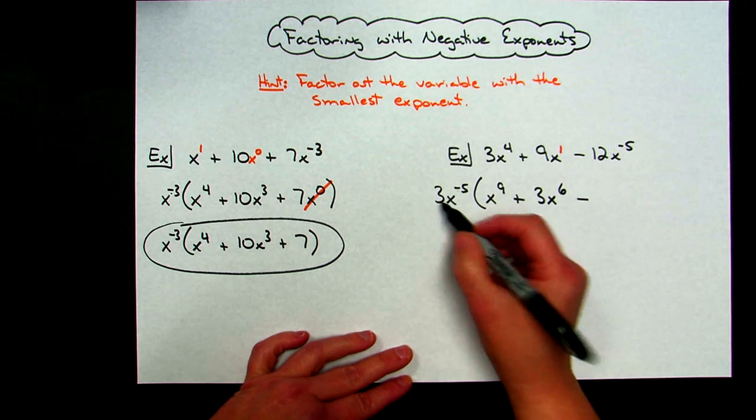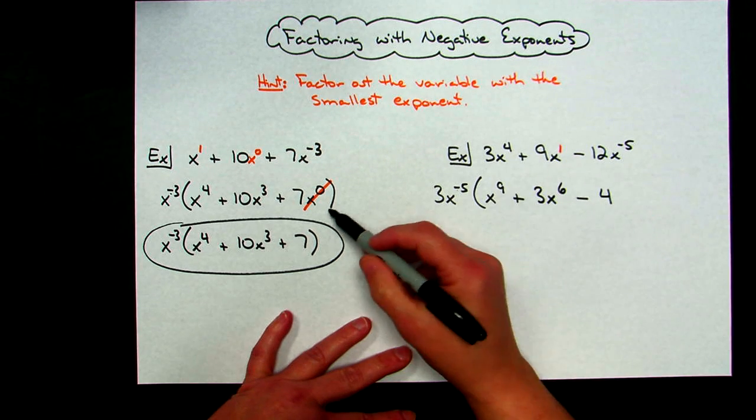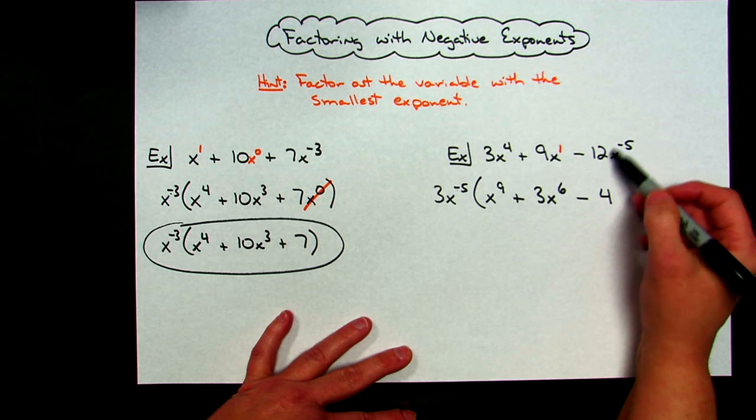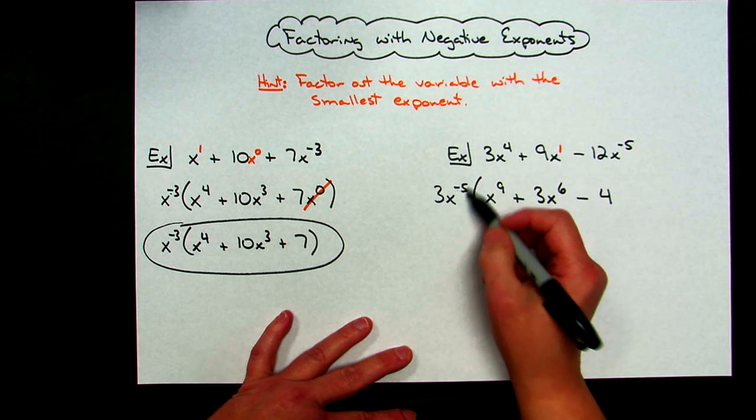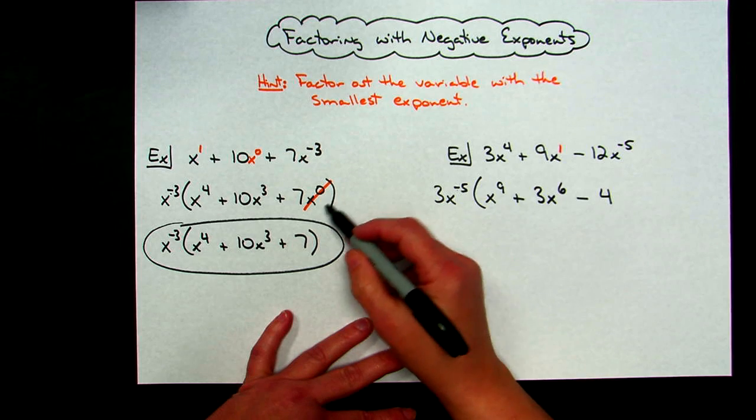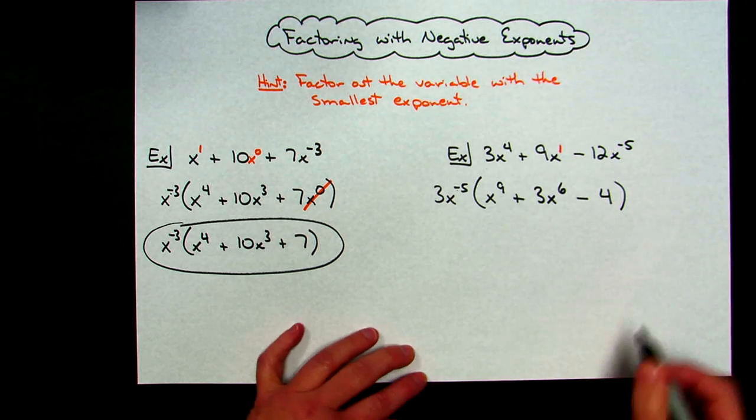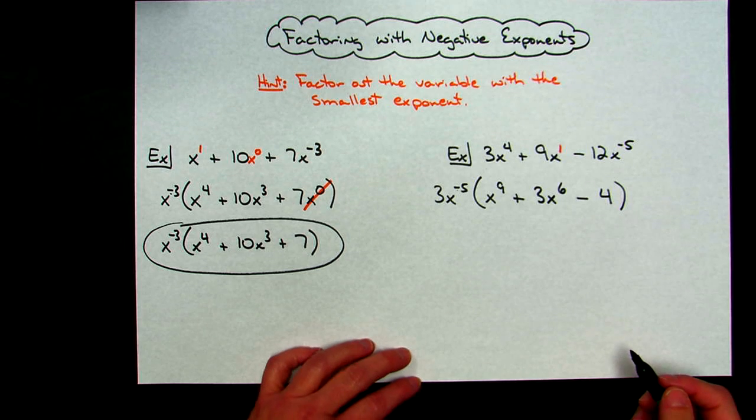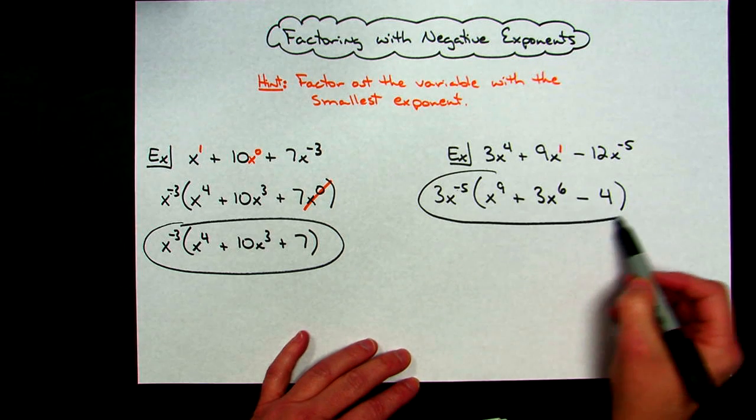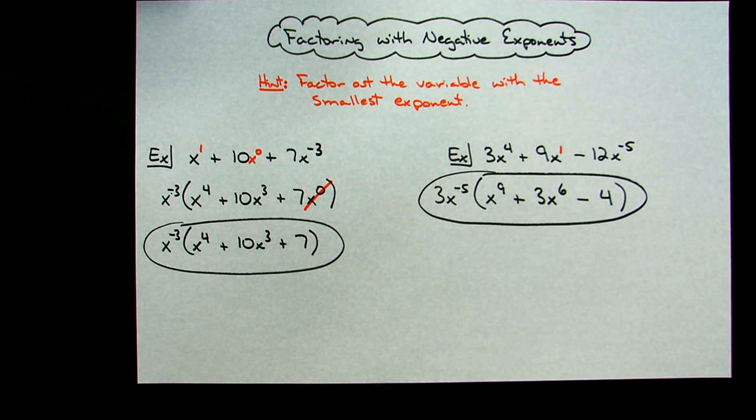And then on this last term I've got the 12. I take out the 3, that's going to leave me with a 4. And then you can just look at this and go, okay, x^(-5), I'm taking out x^(-5), I won't have any variables left there at all. So you don't have to actually put in that x^0 and then cross it out in the next line. So two examples of factoring out negative exponents.